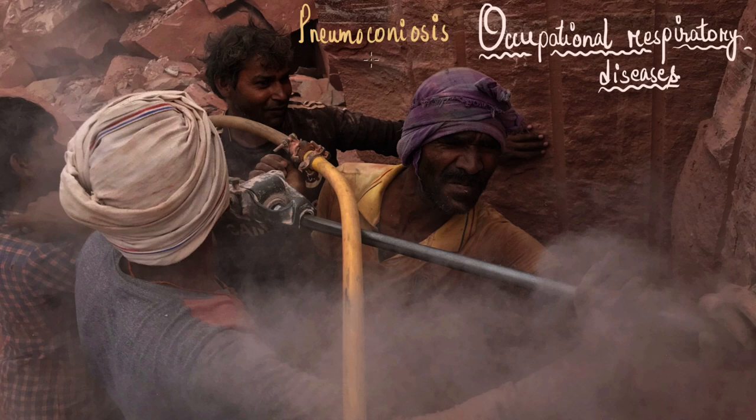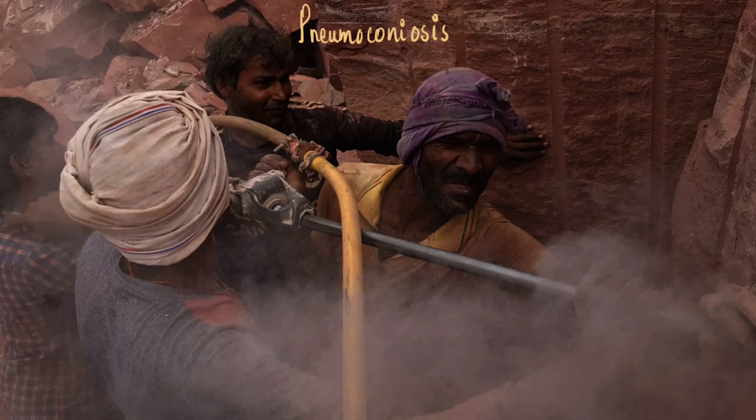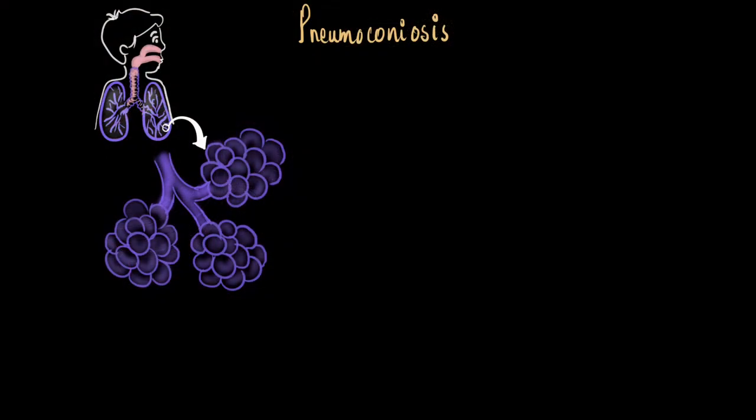Pneum means lungs, corny means dust and osis means an ongoing disease. Now let's have a look at the lungs of a person with pneumoconiosis. Let's look deep inside their lungs and see what goes wrong. So here is the lungs enlarged. These are the alveoli and they will have close association with the blood capillaries.